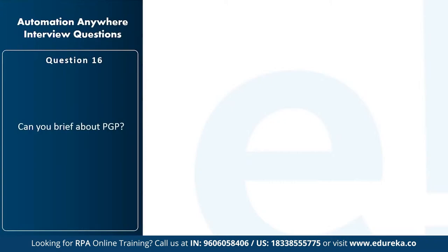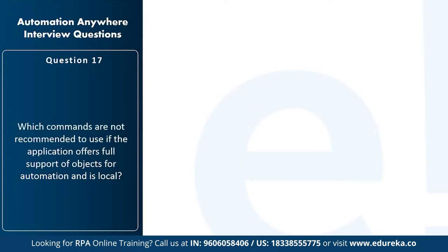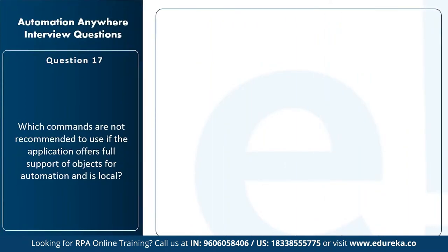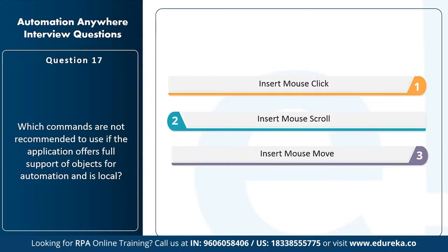The next question is: can you brief about PGP? PGP is a command or activity in Automation Anywhere used to encrypt or decrypt files or create keys by assigning a passphrase. The next question is: which commands are not recommended to use if the application offers full support of objects for automation and is local? The commands not recommended are insert mouse click, insert mouse scroll, and insert mouse move — because if the application offers full object support, object positions can change, making these mouse-based commands unreliable.